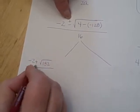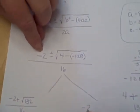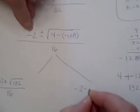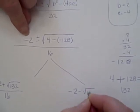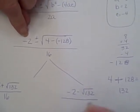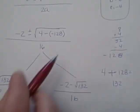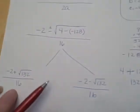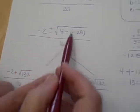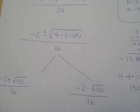Now, we've taken care of this plus here. Now we have to take care of the minus. Negative 2 minus the square root of 132, all over 16. And so all we've done is taken this equation and written it first with a plus here, and second with a minus here.